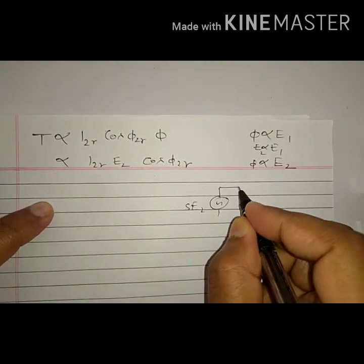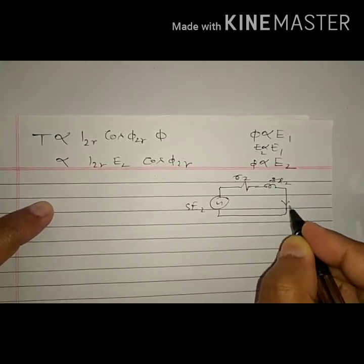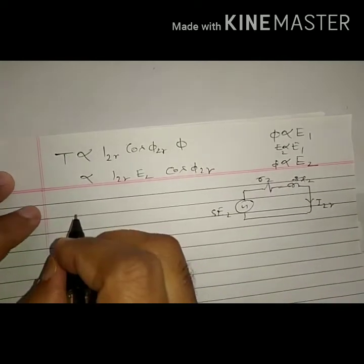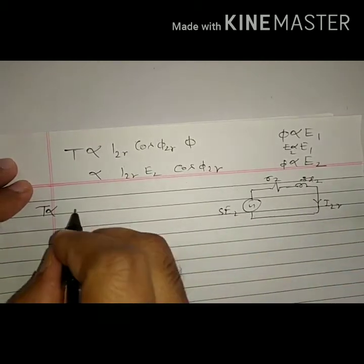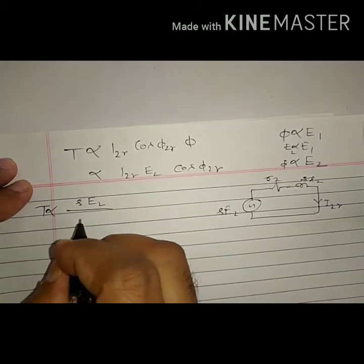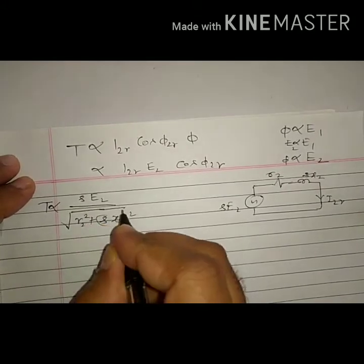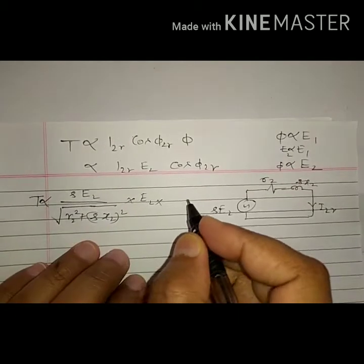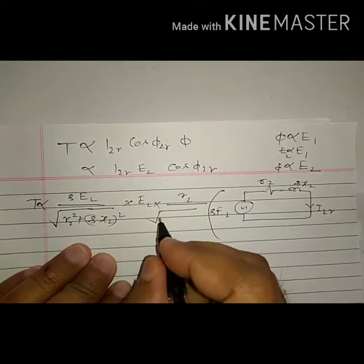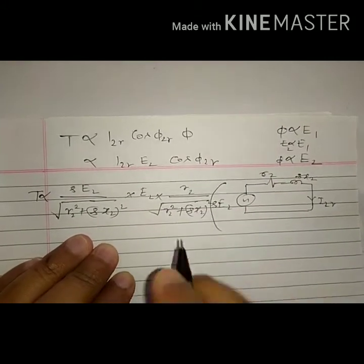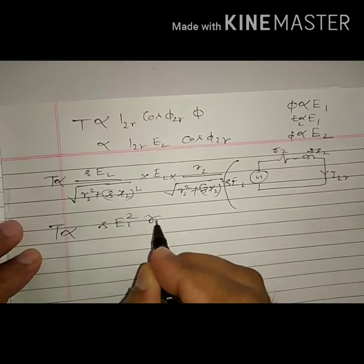For the rotor circuit, with s*e2 as voltage, r2 as resistance, and s*x2 as reactance, we can write current and power factor. Therefore torque is directly proportional to i2r, which is voltage by impedance: s*e2 divided by sqrt(r2² + (s*x2)²), times e2 times cos phi2r, which is r2 by z. So torque is proportional to s*e2² * r2 divided by (r2² + (s*x2)²).